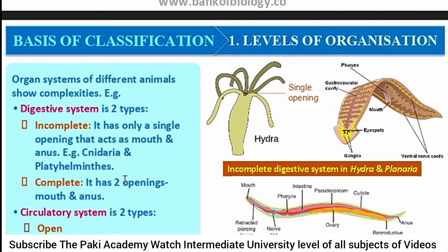There are two types of digestive systems found in animals: incomplete and complete. In an incomplete digestive system, there is only a single opening that acts as both mouth and anus — Cnidaria and Platyhelminthes are examples. The complete digestive system contains two separate openings: a mouth and an anus.